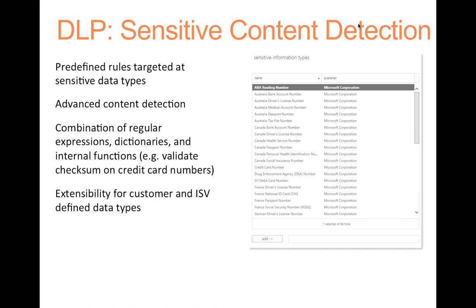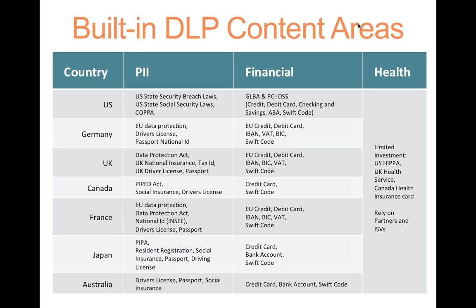DLP has advanced content detection — it looks for credit card numbers, social security numbers, even custom patterns like insurance policy numbers. It has built-in DLP content for different regions: if you're in the US you care about HIPAA and PCI compliance; if you're in Germany, different rules apply. Microsoft has built intelligence into DLP based on where you are, so you don't have to reinvent the rules. A lot of companies trying to be HIPAA or PCI compliant don't need a bolt-on product or third-party firewall — it's all built into Exchange 2013.